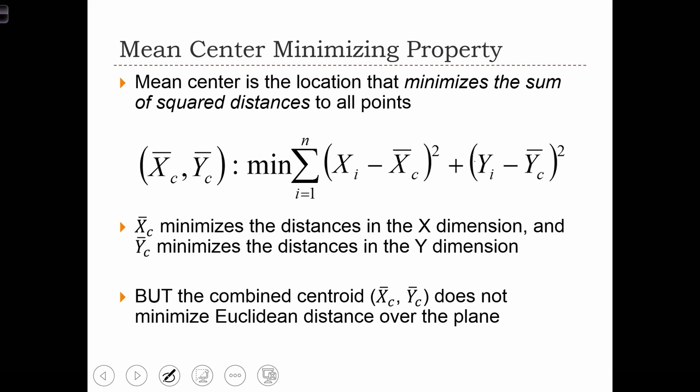The mean center has a minimizing property. It is the location that minimizes the sum of squared distances to all points.